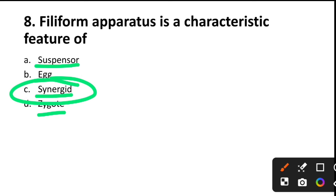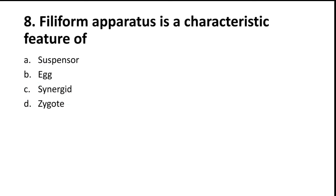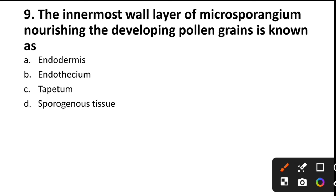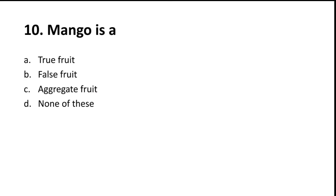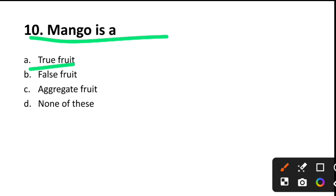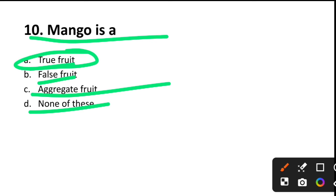Question 8: Filiform apparatus is a characteristic feature of — suspensor, egg, synergid, or zygote? Filiform apparatus is present in the synergids, which are at the micropylar end and help with pollen tube entry. Answer: synergid. Question 9: The innermost wall layer of microsporangium that nourishes the developing pollen grains — microsporangium has 4 layers: epidermis, endothecium, middle layer, and tapetum. The innermost is tapetum, which provides nourishment. Answer: tapetum — option C. Question 10: Mango is a — true fruit, false fruit, aggregate fruit, or none of these? Mango is a true fruit because it develops only from the ovary. Aggregate fruit example: pineapple. Answer: true fruit.